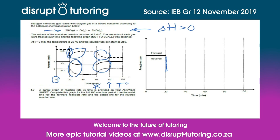To oppose this disturbance, the forward reaction is favored to produce more of the product, meaning the reactants will be used up and the product will be formed. So the rate of the forward reaction will decrease and the rate of the reverse reaction will increase until equilibrium is re-established. We have the rate of the reverse reaction increasing and the rate of the forward reaction decreasing until equilibrium is re-established at 40 minutes. Then equilibrium is maintained from 40 minutes until 60 minutes, where there is another disturbance.